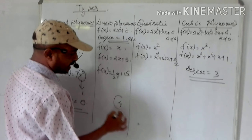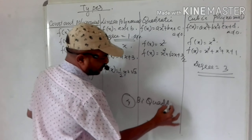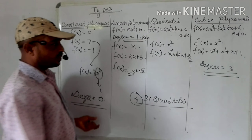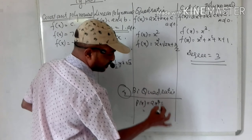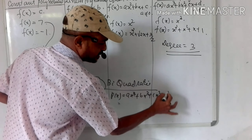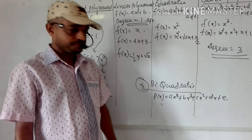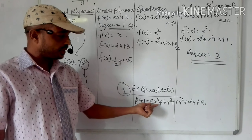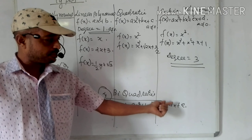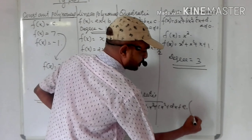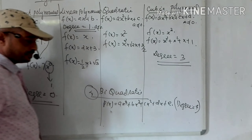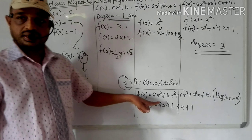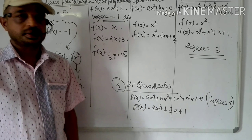A biquadratic polynomial is a fourth degree polynomial. Its general form is f(x) = ax⁴ + bx³ + cx² + dx + e, where a ≠ 0. For example, 2x⁴ + 3x + 1 is a biquadratic polynomial with degree 4.